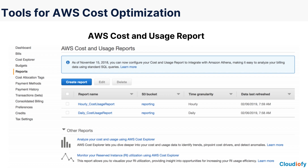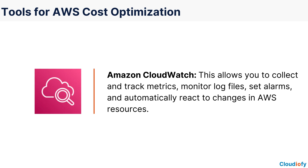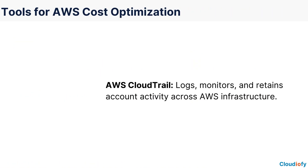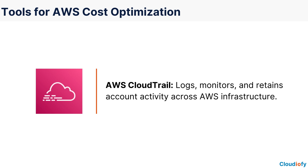Amazon CloudWatch is another important tool for cost optimization. It allows you to collect and track metrics, monitor log files, set alarms, and automatically react to changes in AWS resources, ensuring that you can keep your spending under control. AWS CloudTrail is a service that continuously logs, monitors, and retains account activity related to actions across AWS infrastructure at a low cost, helping you identify areas for optimization.